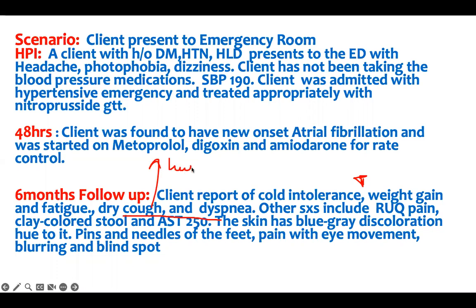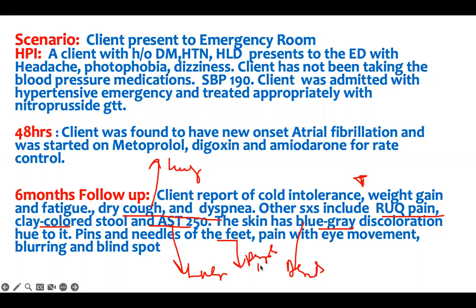Right upper quadrant pain, clay-colored stool, and elevated AST — that indicates a liver problem. The skin has a blue-gray discoloration — that is dermatitis. Pins and needles of the feet — that is peripheral neuropathy. Pain with eye movement, blurring, and a blind spot — this is optic neuropathy.